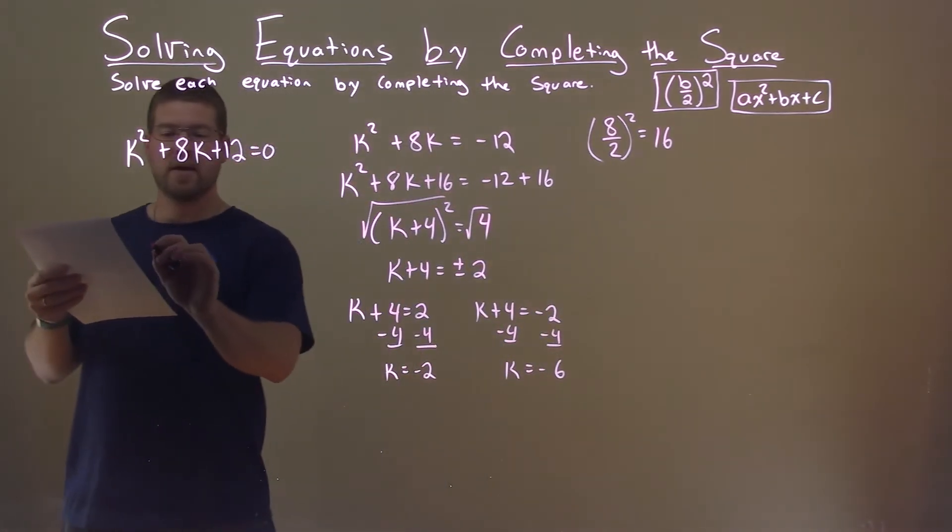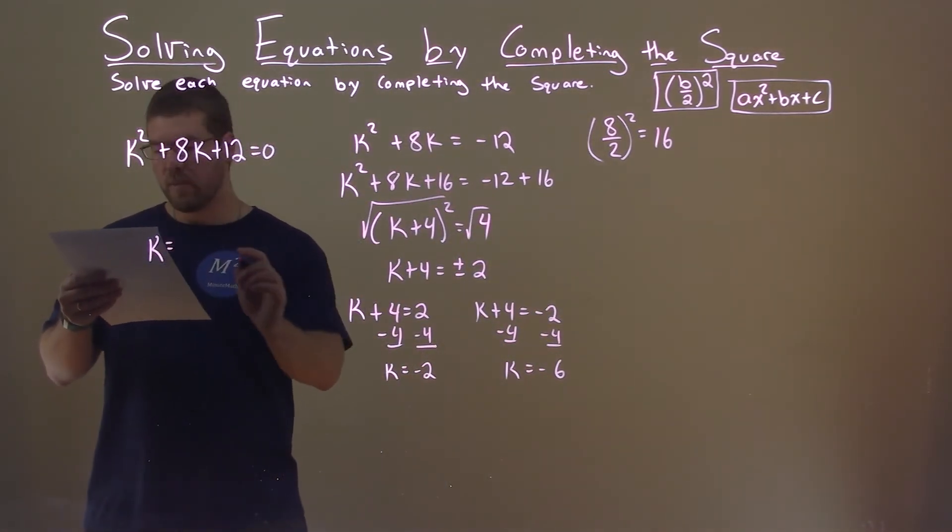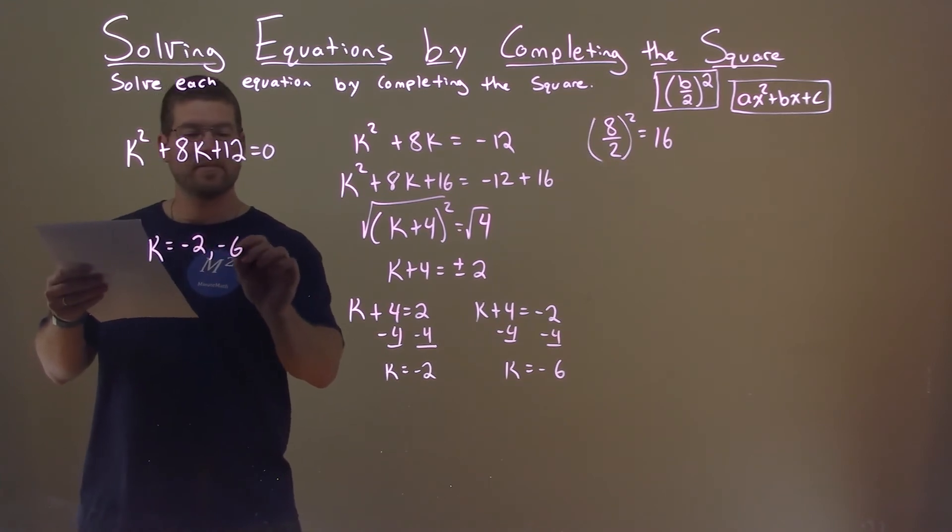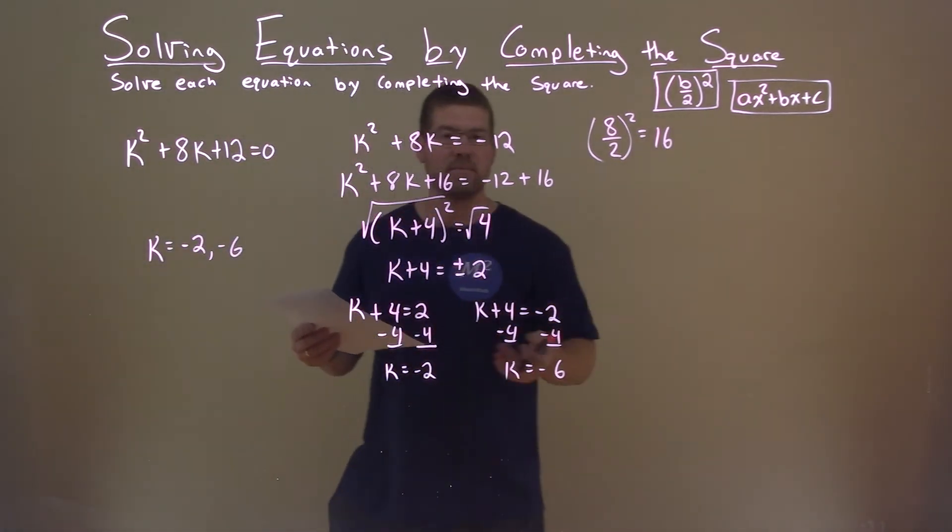So, we can say k is these two numbers, negative 2 and negative 6, and that is our final answer.